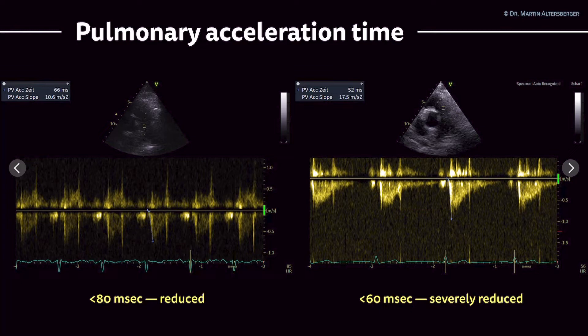You cannot differentiate the grading — you cannot say it is for sure severe pulmonary hypertension, but you can say that it is more likely present the shorter the pulmonary acceleration time gets. Furthermore, you cannot differentiate between primary or secondary pulmonary hypertension, but you can get the information that this might be the patient's problem.